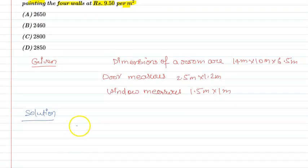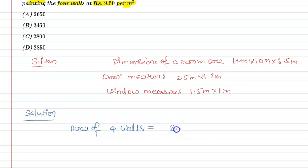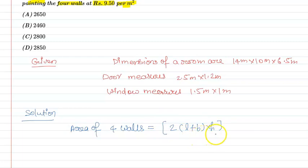Area of 4 walls का formula होता है: 2 times of (L + B) × H, जहाँ L हमारी length है, B हमारी width है, और H हमारी height है।